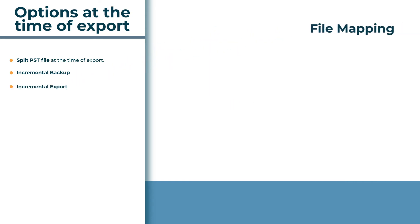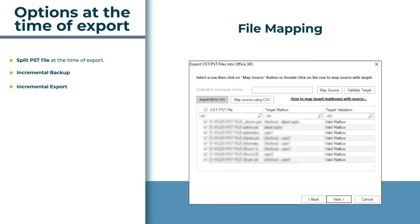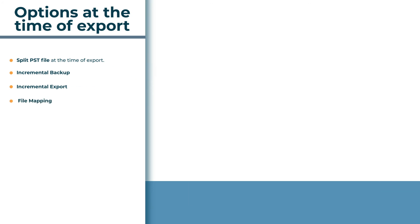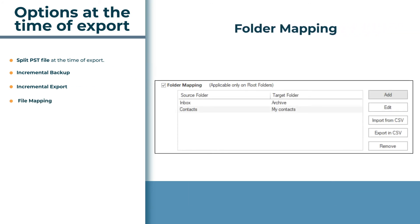The software allows you to map OST and PST files with a target at the time of export, where you can export the source and target mapping list into CSV format. Users can also map source with target mailboxes using a CSV file or the map source option. An advanced folder mapping option lets you export source folder data into a specific target folder.